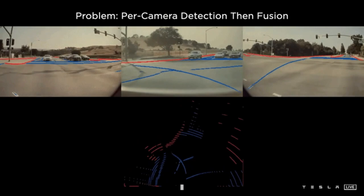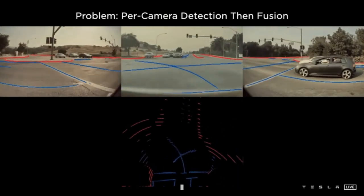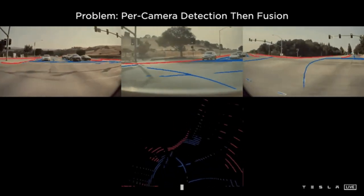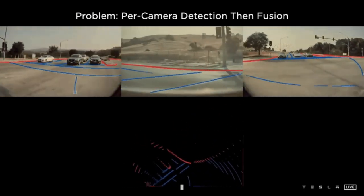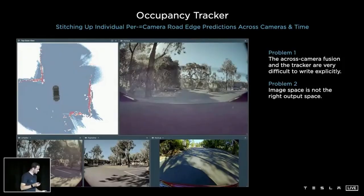Tesla calls this 3D space vector space. The information of the vehicle and the space in which it is located, such as the position, speed, lane, signs, signal lights, and surrounding objects of the vehicle, is digitized and then visualized in this space.